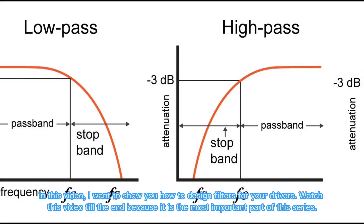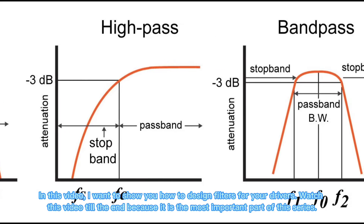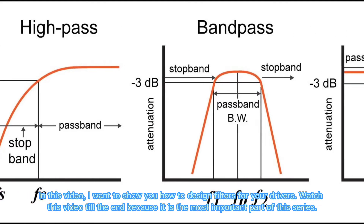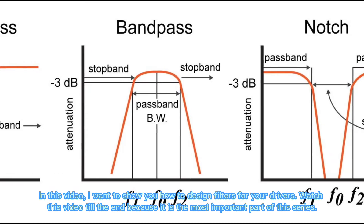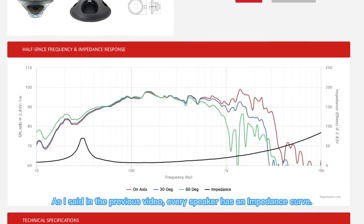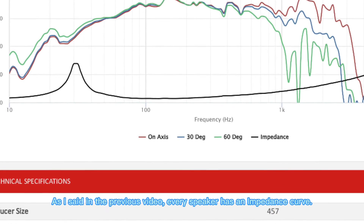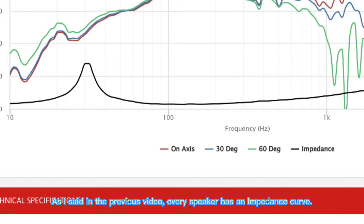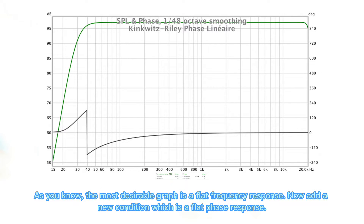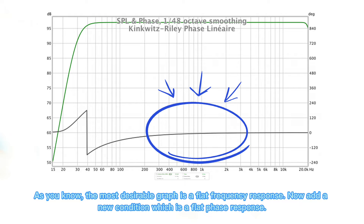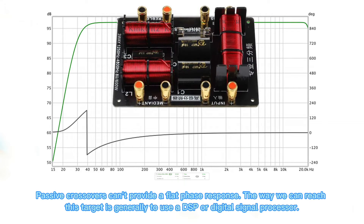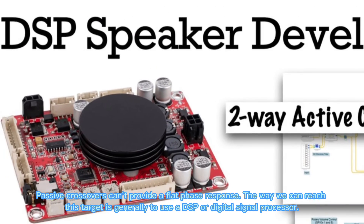In this video, I want to show you how to design filters for your drivers. Watch this video till the end because it is the most important part of the series. As I said in the previous video, every speaker has an impedance curve. As you know, the most desirable graph is a flat frequency response. Now add a new condition which is a flat phase response. Passive crossovers can't provide a flat phase response. The way we can reach this target is generally to use a DSP, or digital signal processor.